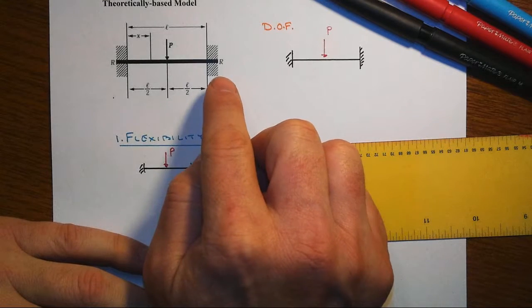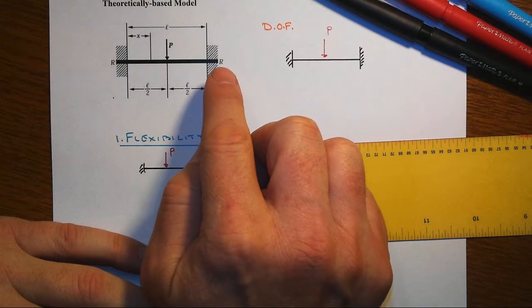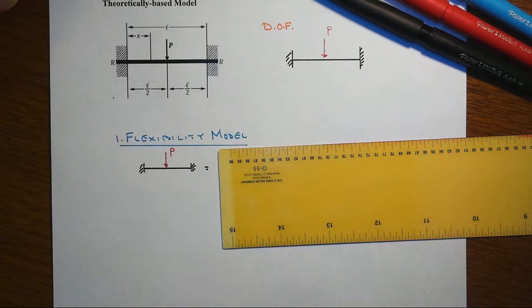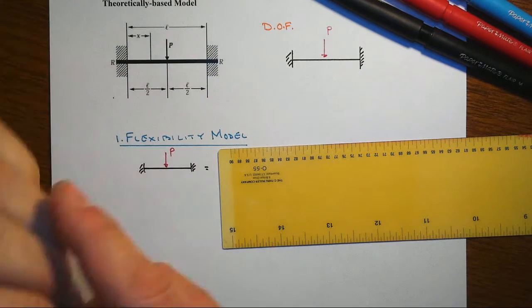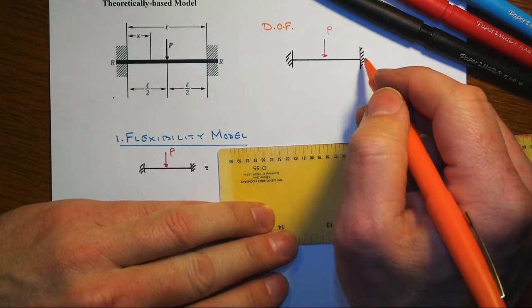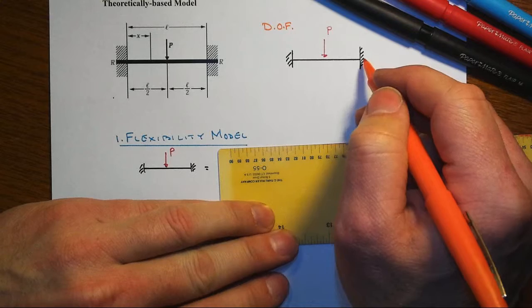Recall that we've got a third degree indeterminate system, but we're not going to focus on the axial indeterminacy and just focus on the shear and the moment. As such, we're going to end up removing this fixed support over here at the right.